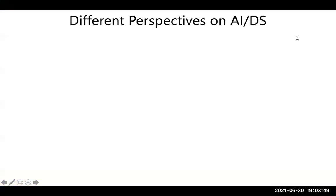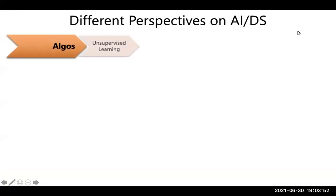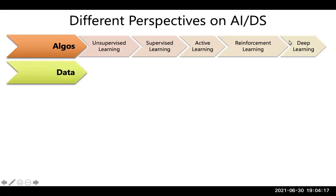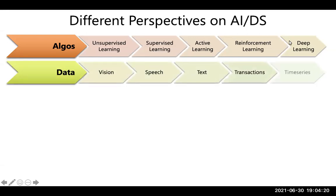We can learn AI from different perspectives. One is the algorithms perspective: unsupervised learning, supervised learning, active learning, reinforcement learning, deep learning, and so on. Another is the data perspective, covering areas like computer vision, speech processing, text and NLP, transaction data like market basket analysis, and time series.